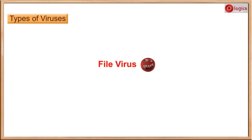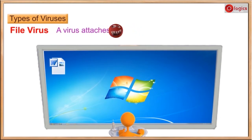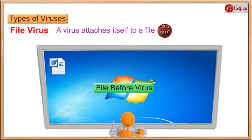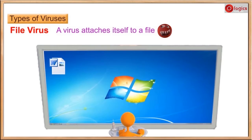File virus. File viruses generally attach themselves to a regular program file. Observe the MS Word file on the desktop — this file appears normal before the virus. You are able to open the file and work with it. Once the file gets infected by a virus, it is not at all useful to work with it.